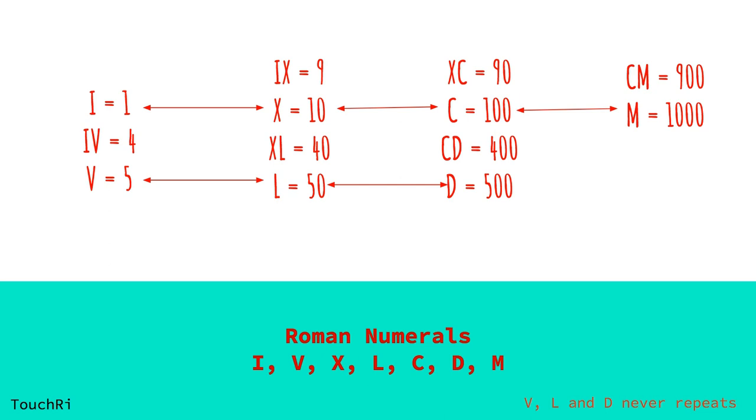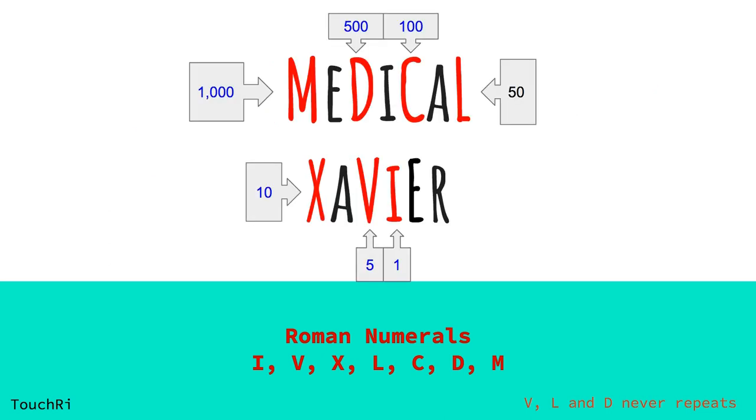Now, going back to our mnemonic, Medical Saviour, this term includes all of our symbols in reverse order. Like M is 1000, D is 500, C is 100, L is 50, X is 10, V is 5, and I is 1.